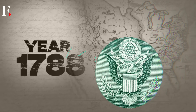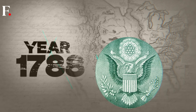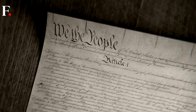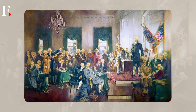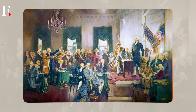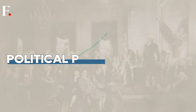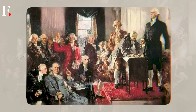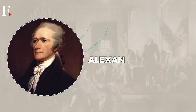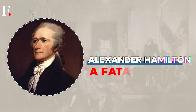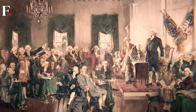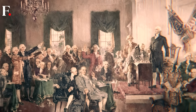The year was 1788. The United States was still a young nation, and it was ratifying its constitution. There were a lot of differences, but America's founding fathers agreed on one thing: political parties were evil — they would tear the nation apart. Alexander Hamilton even called them a fatal disease. So they omitted political parties altogether from the constitution.